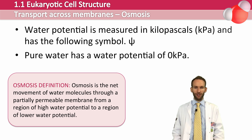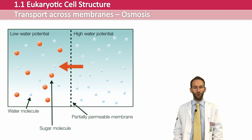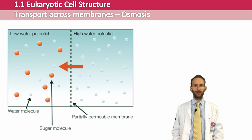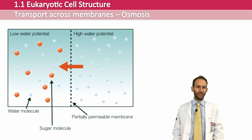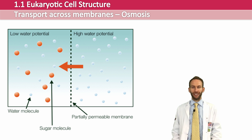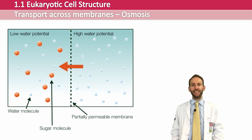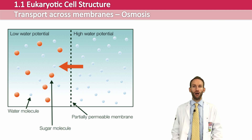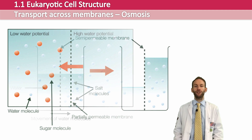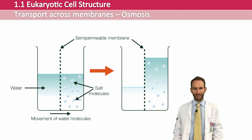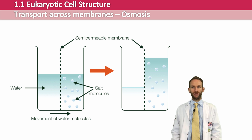Here on this diagram you can see an area of high water potential — pure water on the right-hand side — which would have a water potential of zero kilopascals. On the left-hand side of this membrane the water potential is lower because of the sugar molecules. When you dissolve a solute in water it interacts with the water molecules around it and stops them from being able to move freely, so there are fewer free water molecules and therefore a lower water potential. The more you dissolve into the water, the lower the water potential will become. Water has moved across the partially permeable membrane to the lower water potential where the solute molecules are, and the volume has increased, but now the water potential will be equal on both sides of the membrane.